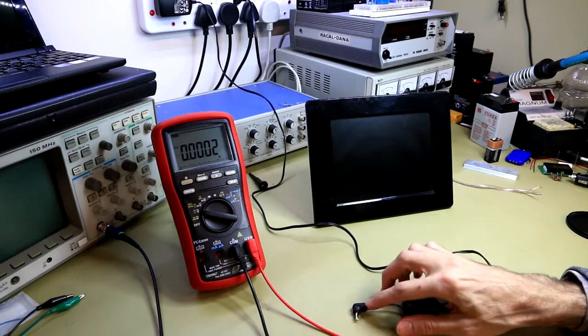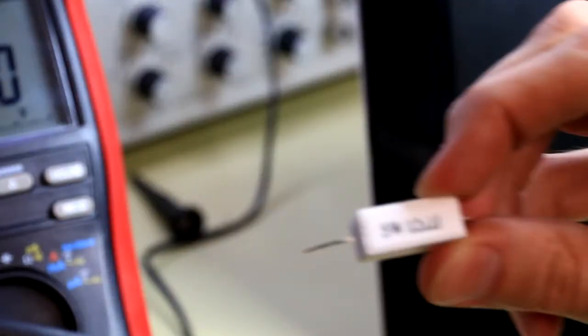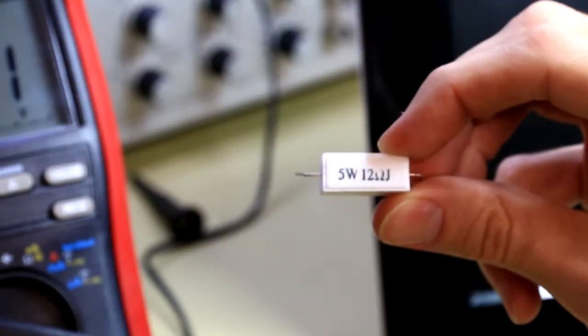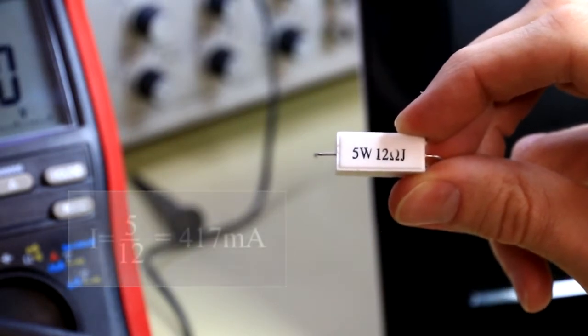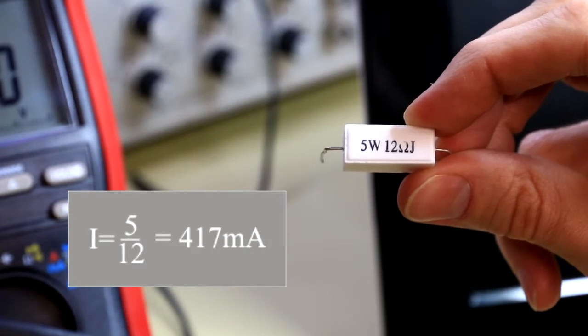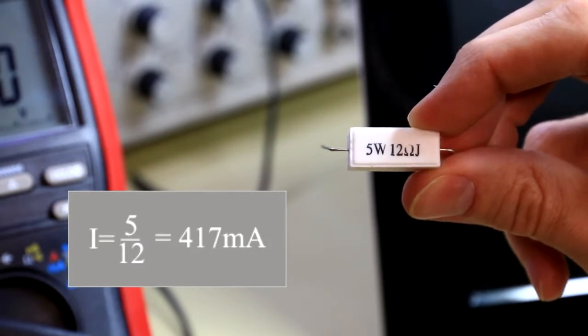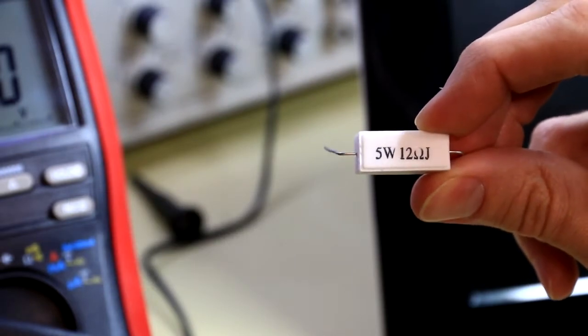would be to put a load on the output of this power supply and see what the voltage level looks like then. So I think I'm going to be using this 5 watt 12 ohm resistor to put some load on it. At a capacity of 2 amps, the power supply should be able to power this resistor at 5 volts as well.